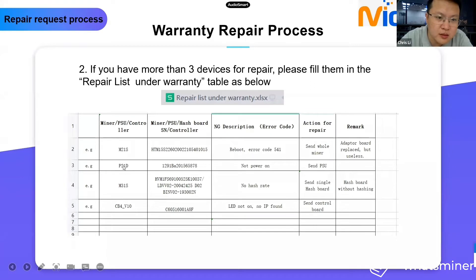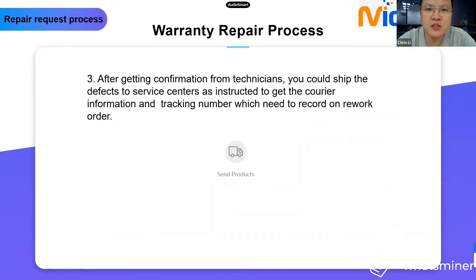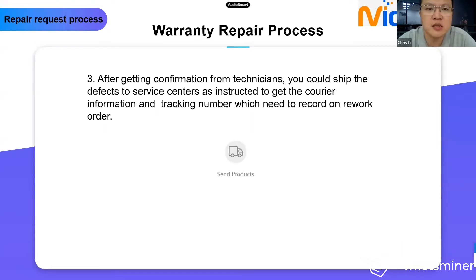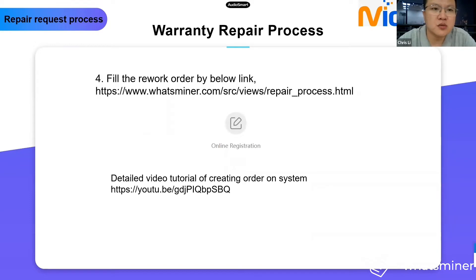After getting confirmation from technicians, you can ship the defective parts to the instructed service center. Note that some service centers may not be available, so we will instruct you to the correct one. You should also record the courier information and tracking number on the rework order. Then fill in the rework order using the link provided below, along with the detailed video tutorial for creating an order in the system.